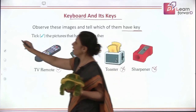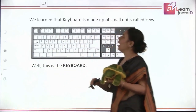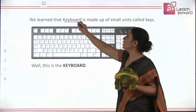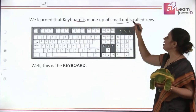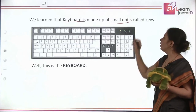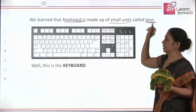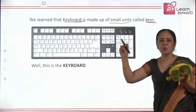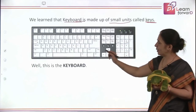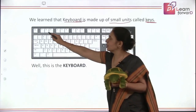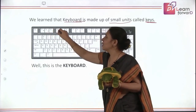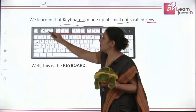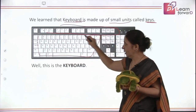And we move to the next screen. Children, we will tell you that a keyboard is made up of very small units which are called keys. When you look at the keyboard, you can see very small buttons on it like this. These are individual keys on it, and we are going to learn about these keys in the upcoming slides.